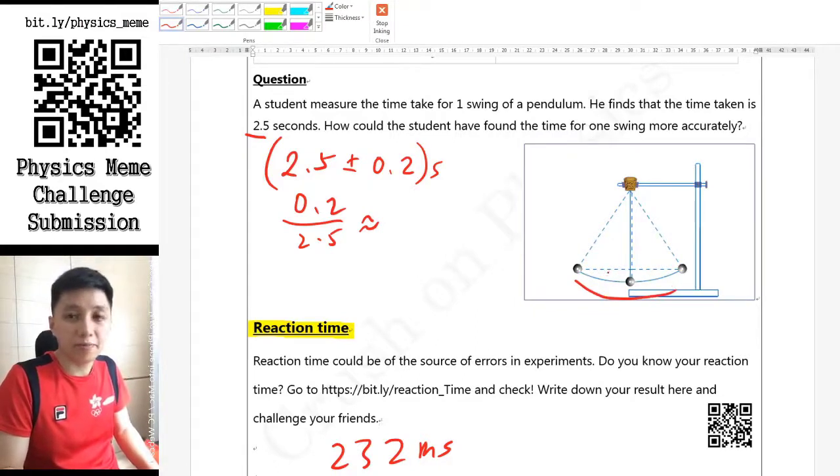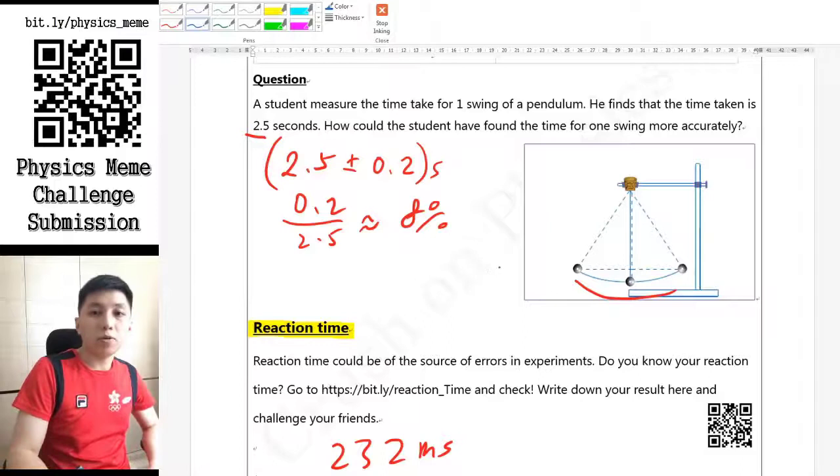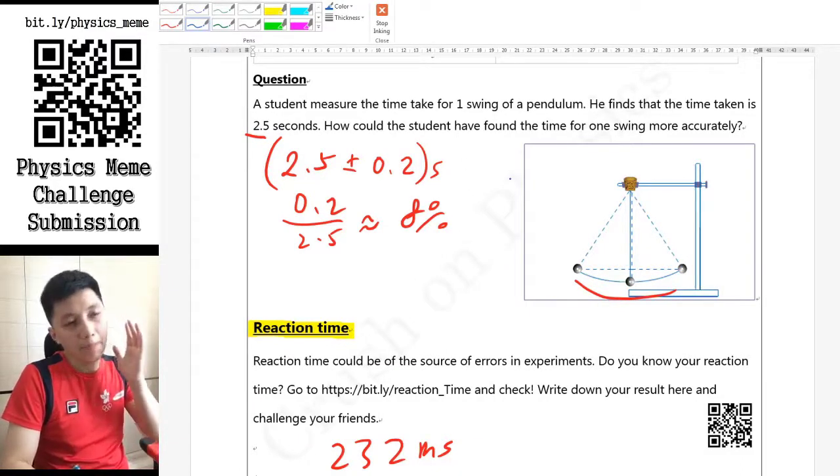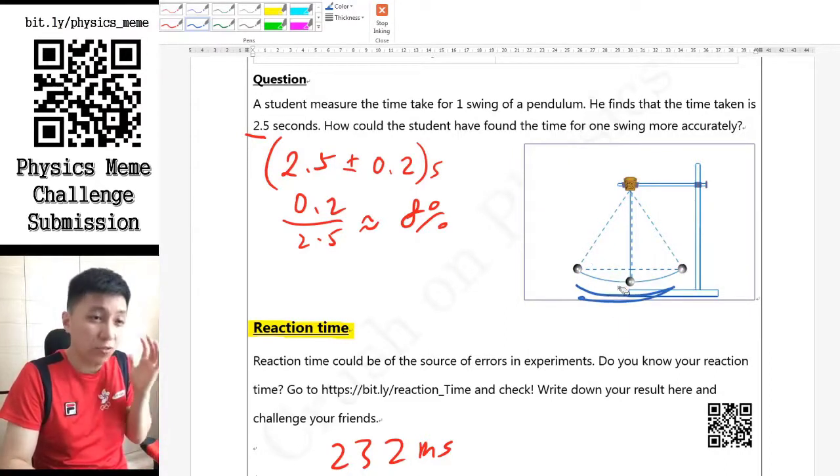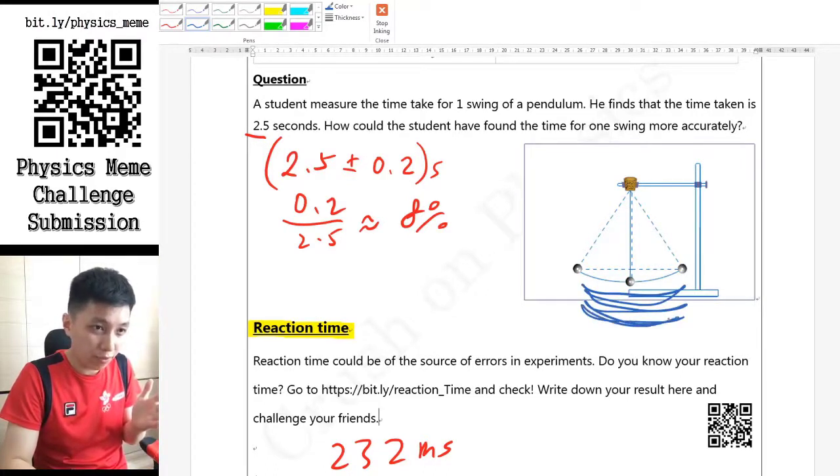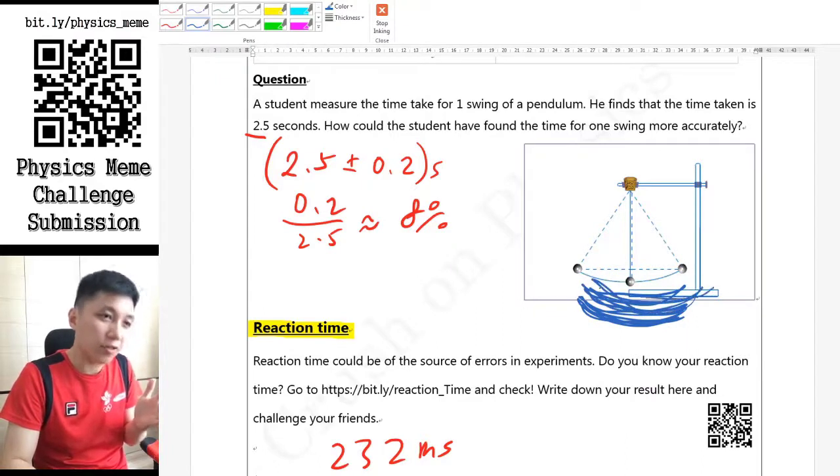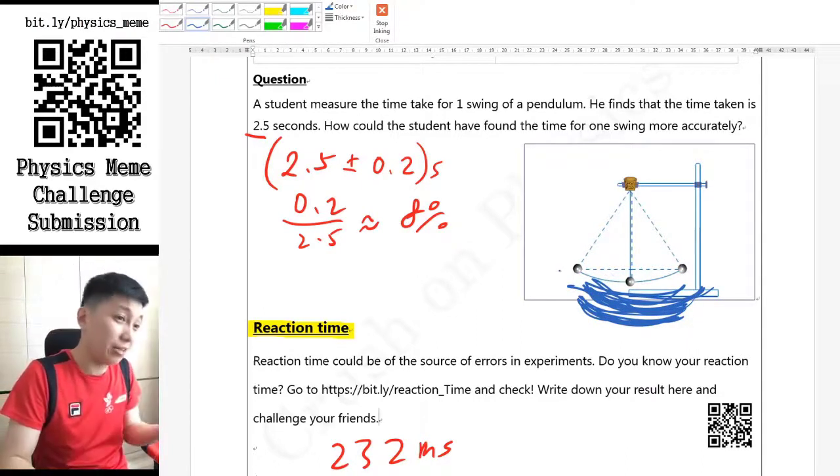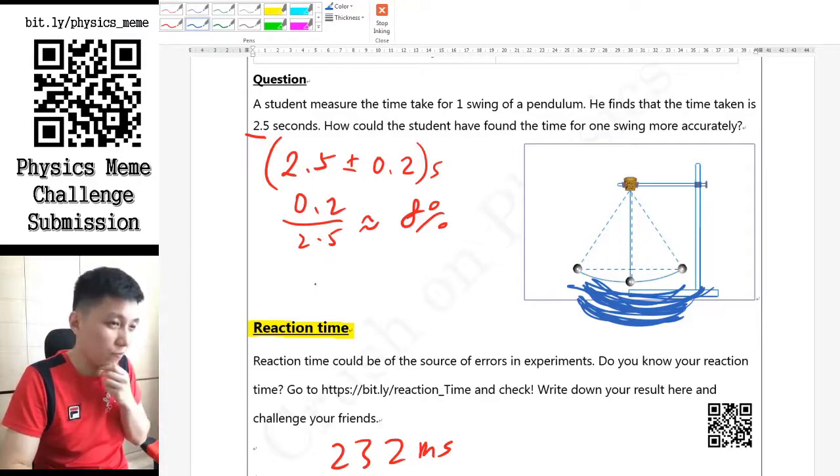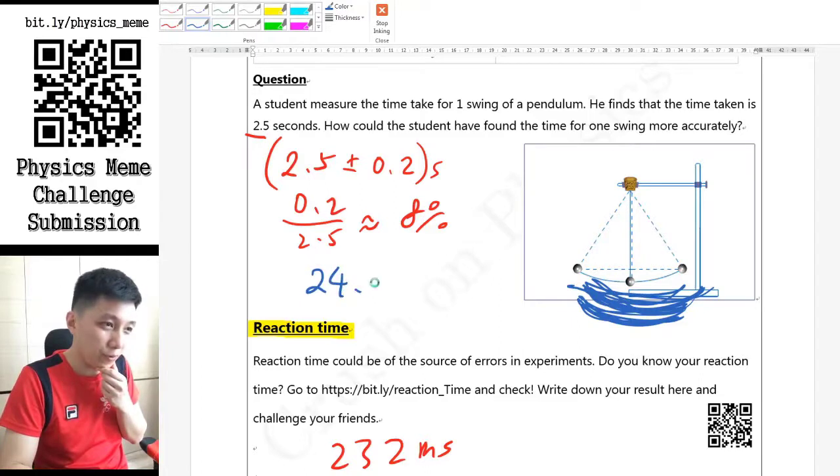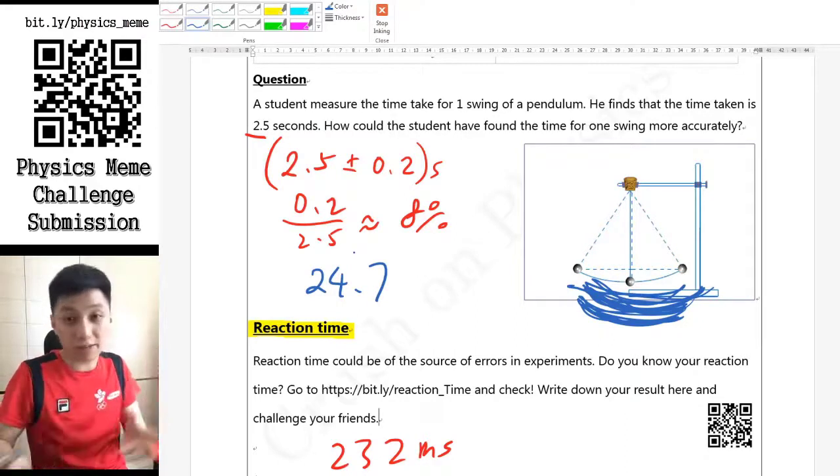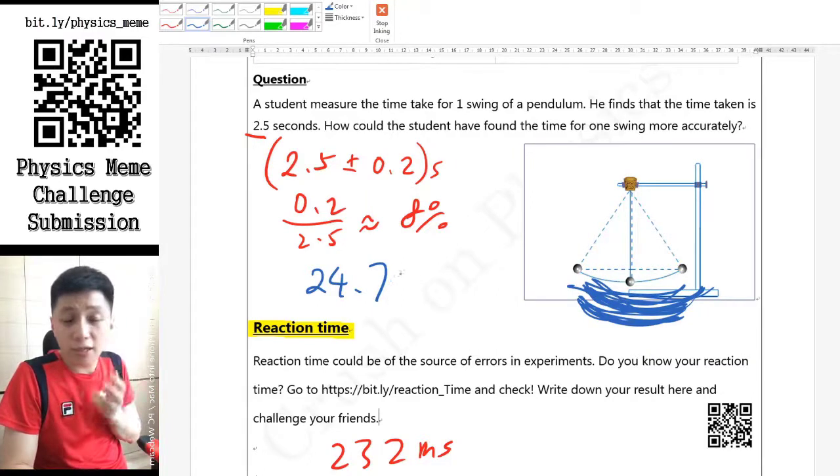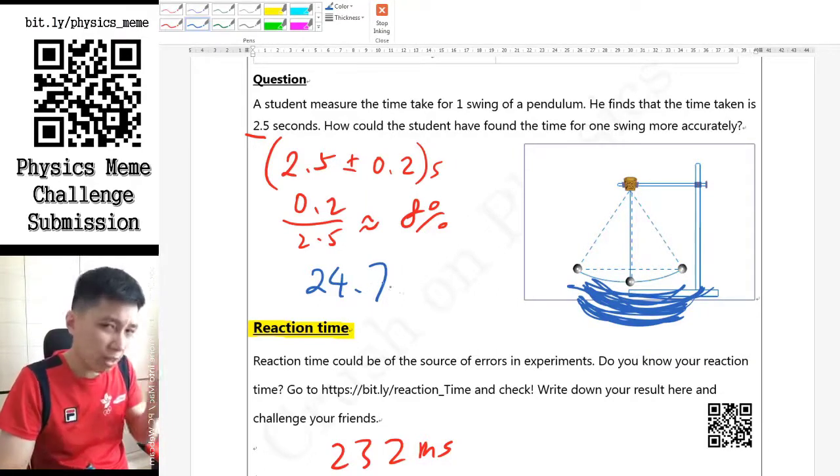Can you think of how we can measure the time for one swing accurately? Pause the video and think about it, and we'll discuss later. The answer is actually by measuring more times of swing. For example, you don't actually have to do just once - you can actually do 10 times. For example, 1, 2, 3, 4, 5, 6, 7, 8, 9, 10, and then you probably would be able to measure a time swing. Let's say roughly maybe 24.7, because it should be roughly about 10 times of 2.5.